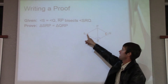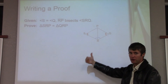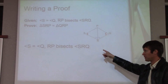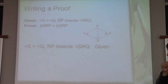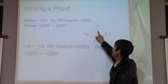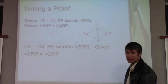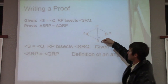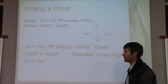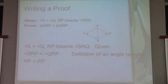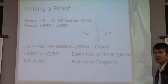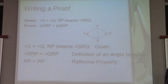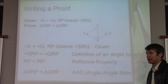Right now we have angle-angle. Is there any other angle or side we can prove congruent? We go through our given — it's given to us. How do I know that SRP is equal to QRP? It's the definition of an angle bisector. Now I have angle-angle. See this side PR and PR — how do I know RP is equal to RP? That's the reflexive property. So now I have angle-angle-side, and I can prove that triangle SRP is equal to triangle QRP by angle-angle-side.